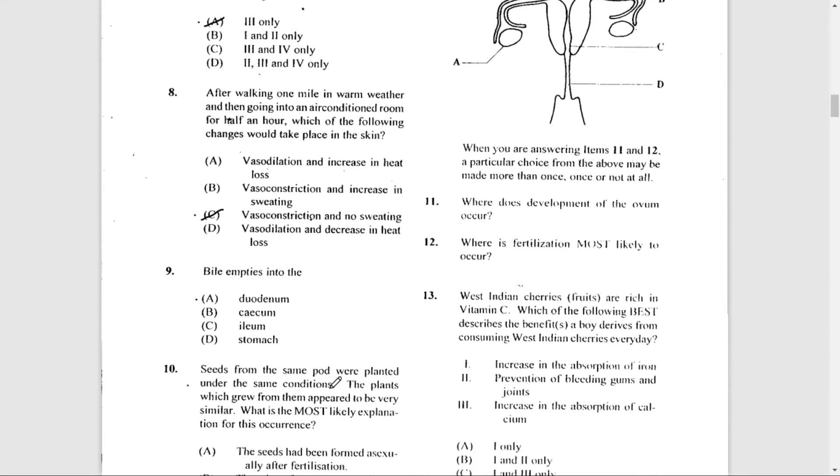Number 9: Bile empties into the duodenum, the first part of the small intestine. Remember, bile is produced in the liver, stored in the gallbladder, and emptied into the duodenum of the small intestine.